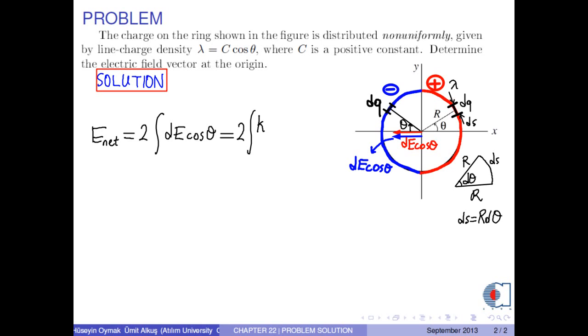dE is calculated by k times dq over r squared. Since dq is lambda times ds, where ds is the infinitesimal arc length, which is calculated by the formula r times d theta, we obtain dq as lambda times r times d theta.